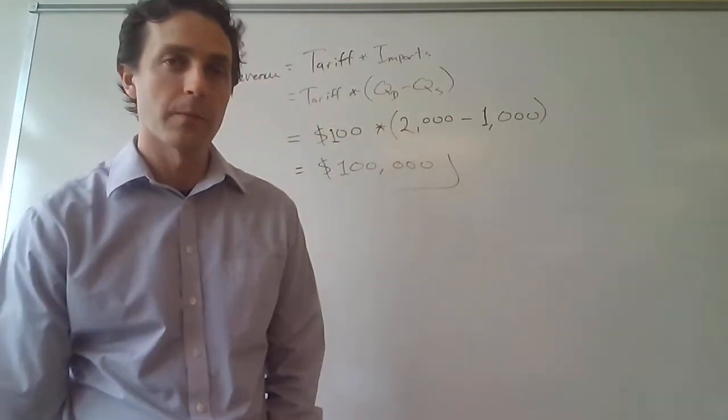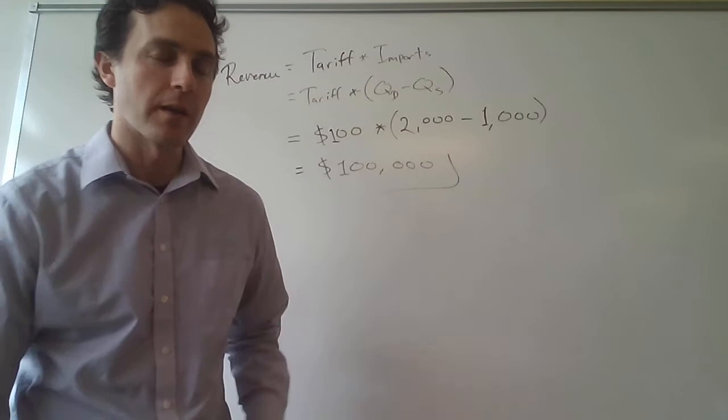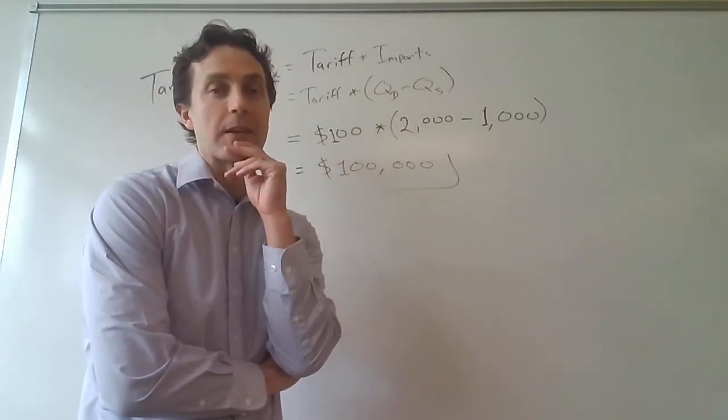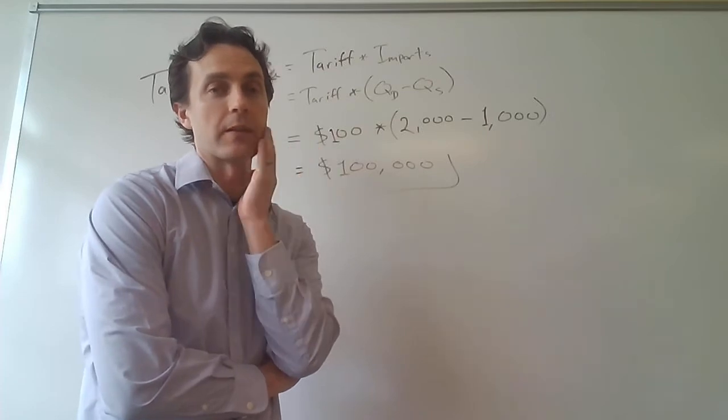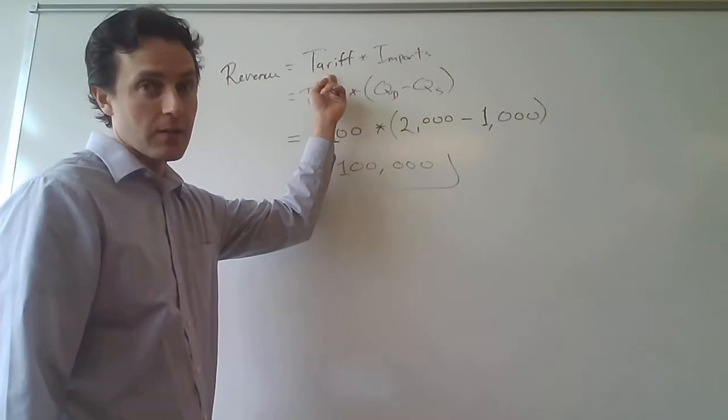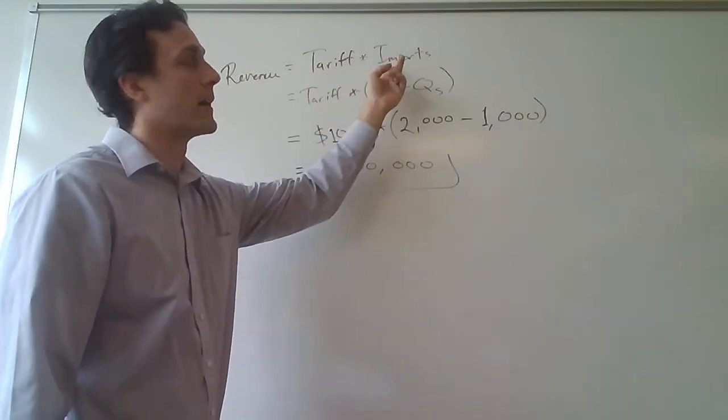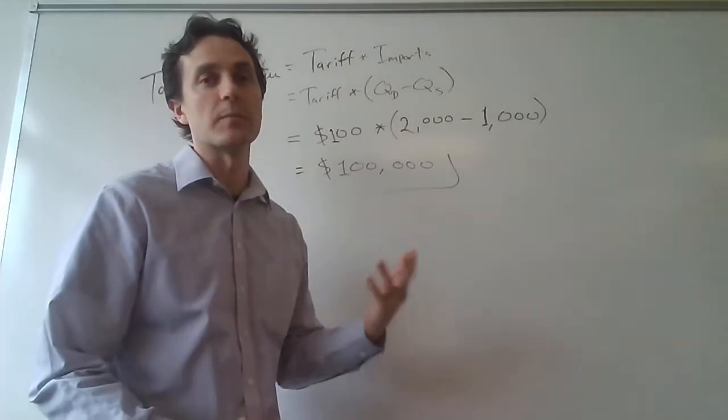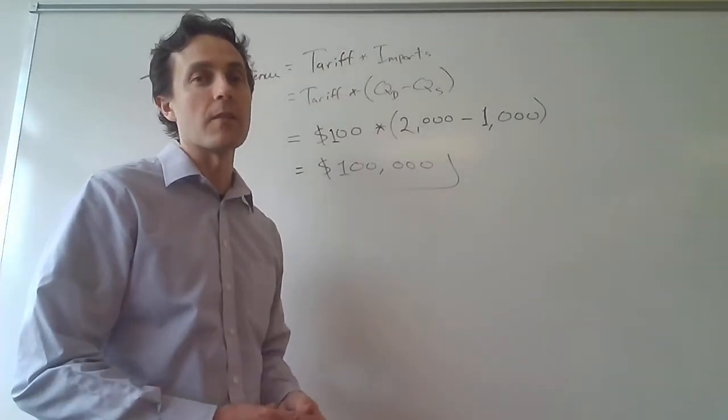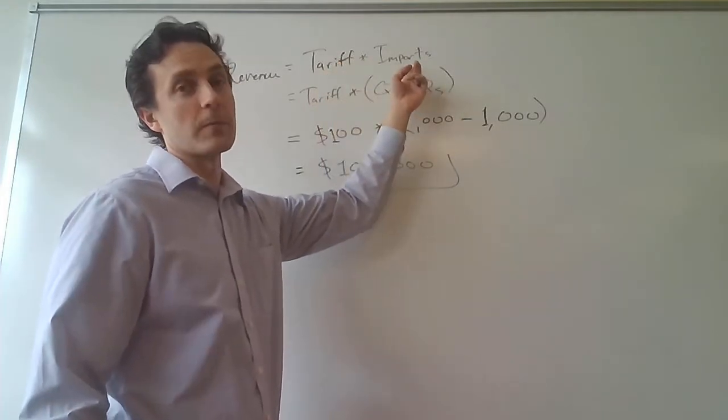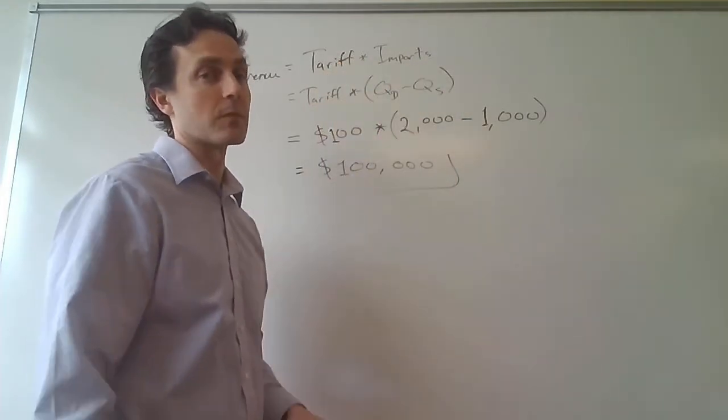So first thing to keep in mind is: how do we calculate government revenue from a tariff? Well, it's simply the amount of the tariff multiplied by the number of units that are imported. Because each unit is going to be taxed by the amount of the tariff, the government is going to bring in the tariff amount times the number of imports being brought in.